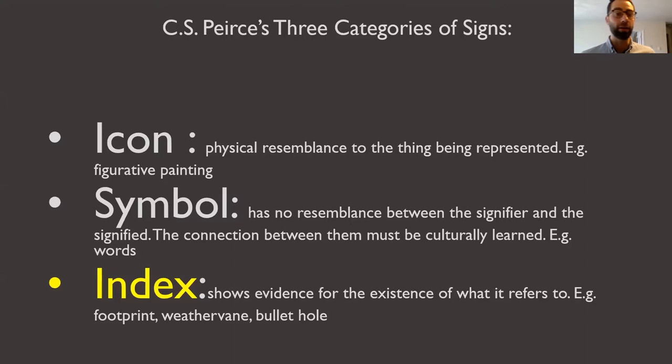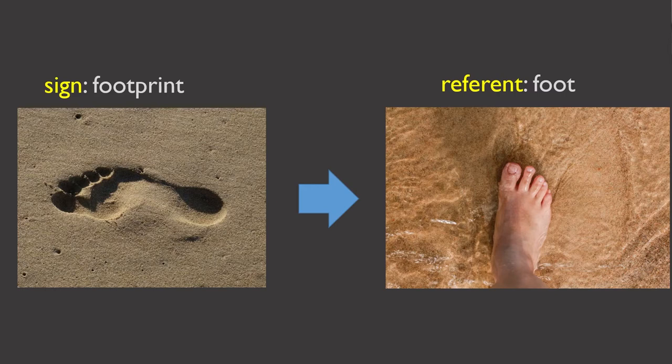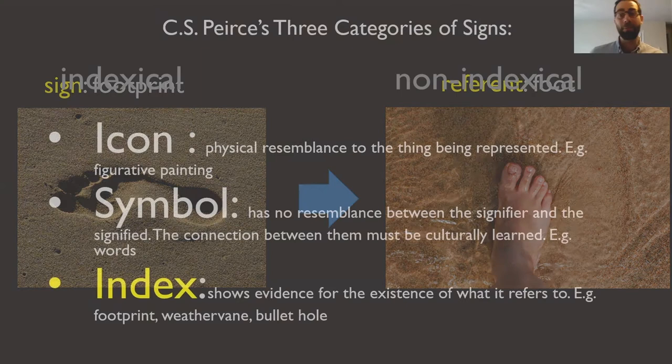A footprint is probably the best example of an index. You look at a footprint in the ground and it testifies to the existence of a foot being there at some time in the past. It does more than, say, a painting of a foot — it testifies to the existence of a particular foot.